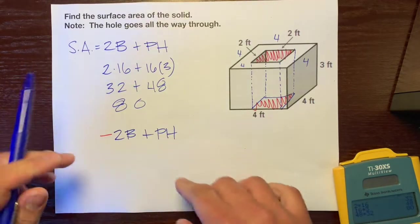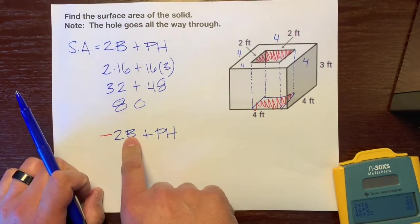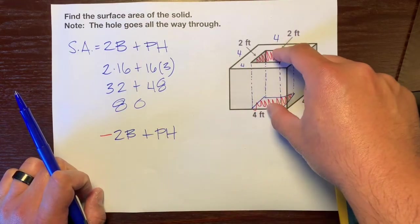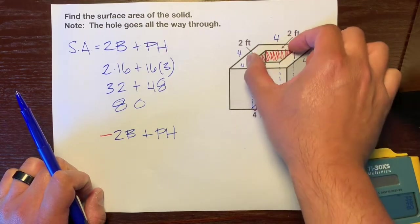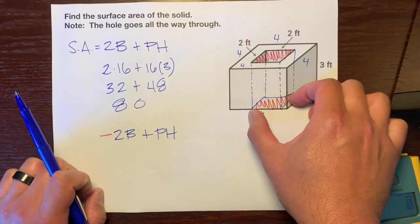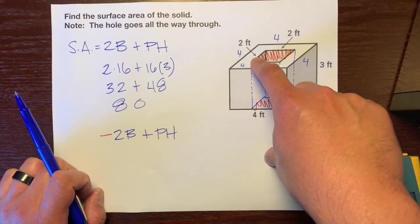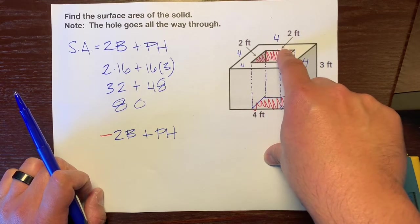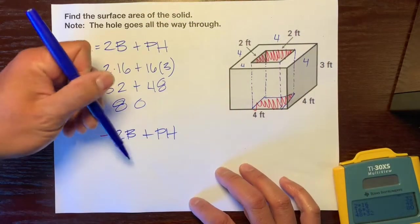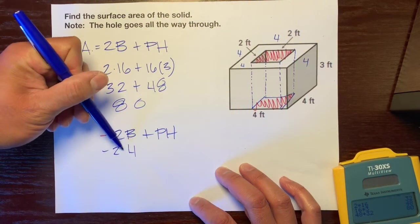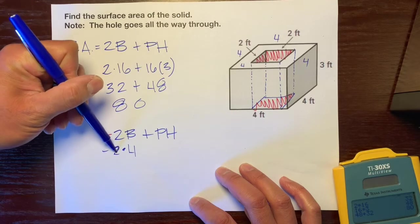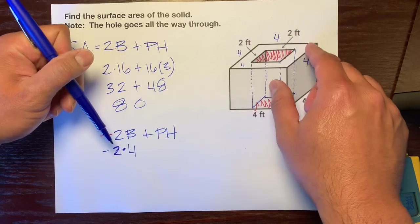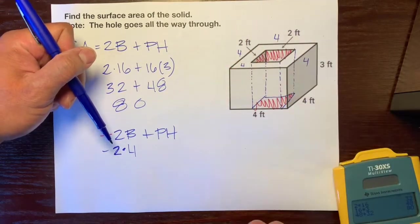Now let's plug some things in. B represents base area—we're going to use the top and bottom faces for this rectangular prism. The length here is 2 feet, so 2 times 2 is 4. We'll bring down that negative 2, don't forget the negative, because these squares take away from this big square.